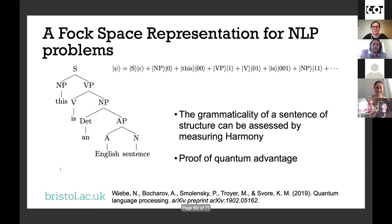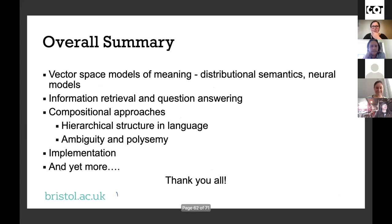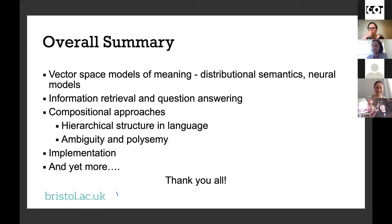So to wrap up: I won't explain the quantum hardware implementation because the next talk will cover that. Overall, we've covered vector space models of meaning, distributional semantics, compositional approaches including DisCoCat and pregroup grammar, hierarchical representations using positive operators, and density matrices for ambiguity. Thank you very much — we have time for questions now.